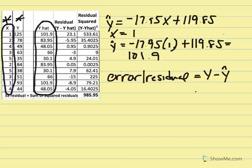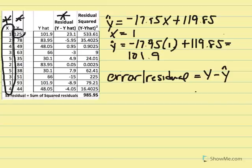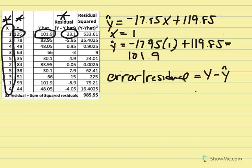The y-hat column represents the predicted value using our regression equation. The residual column is calculated by taking the actual y-value — in the first case, 125,000 — minus the predicted value of 101.9, giving a difference of 23.1. The regression line is the best-fitting line; it minimizes the squared residual. I've calculated the residual squared by taking the actual minus the prediction and squaring all those values. So 533.61 is simply 23.1 squared.